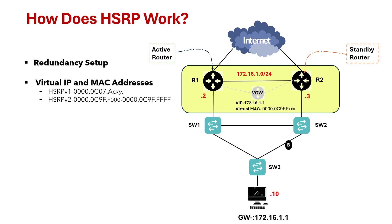Now let's look at the failover process. If the active router stops working, the standby router takes over immediately using the same virtual IP address and MAC address. The switchover is seamless so your network devices won't notice the change. For example, if traffic is passing through R1 and R1 fails, the traffic will immediately switch over to R2.